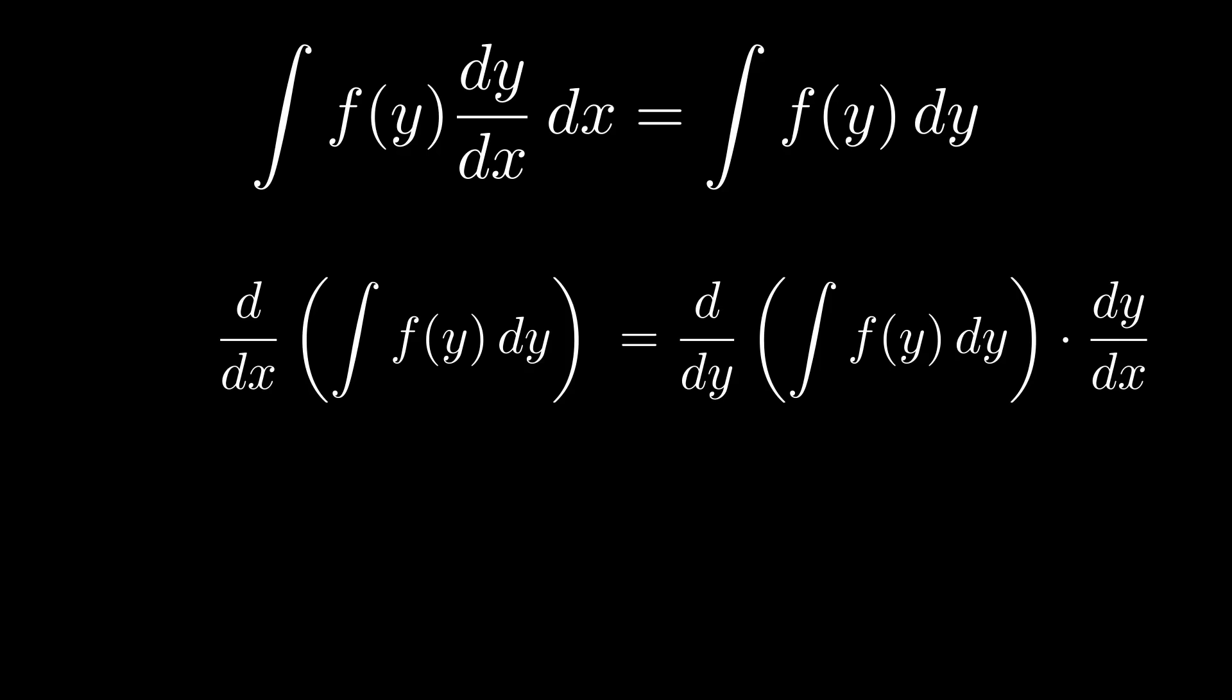If you can get your mind around that, the rest of the proof isn't so bad. Because now, apply the fundamental theorem of calculus. We're differentiating an antiderivative dy. That is, d dy of the integral of f of y dy should just be f of y. That's fundamental theorem of calculus. If I integrate a derivative, they sort of cancel each other out, like squaring a square root. So we have this statement.